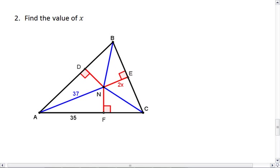Again, since N is our incenter, we know that the distance to the sides is all equidistant. So NF, ND, and NE are all the same.